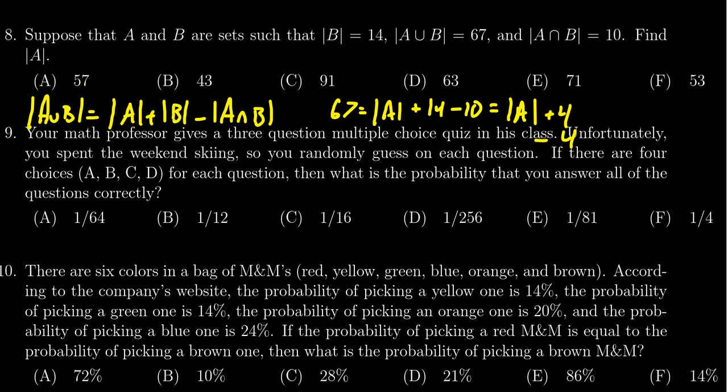Then we subtract 4 from both sides of the equation. So we get that the cardinality of A equals 67 minus 4, which gives us 63. And so we see that the correct answer is, in fact, D.